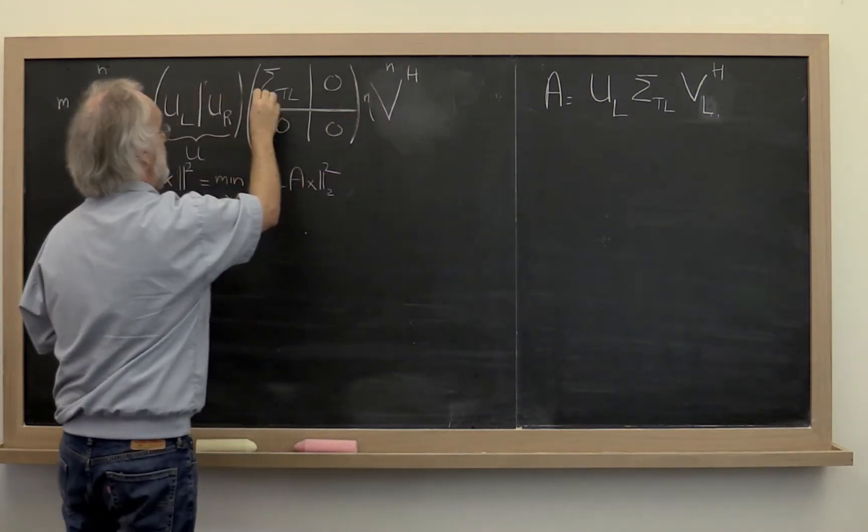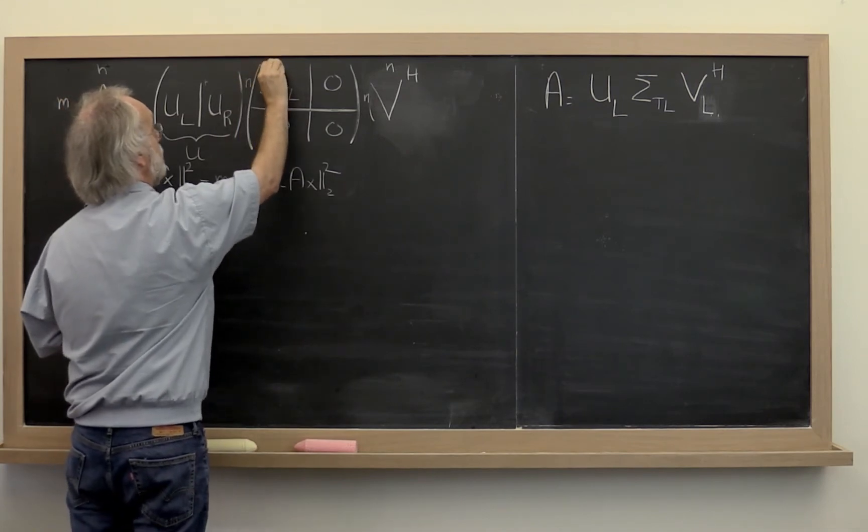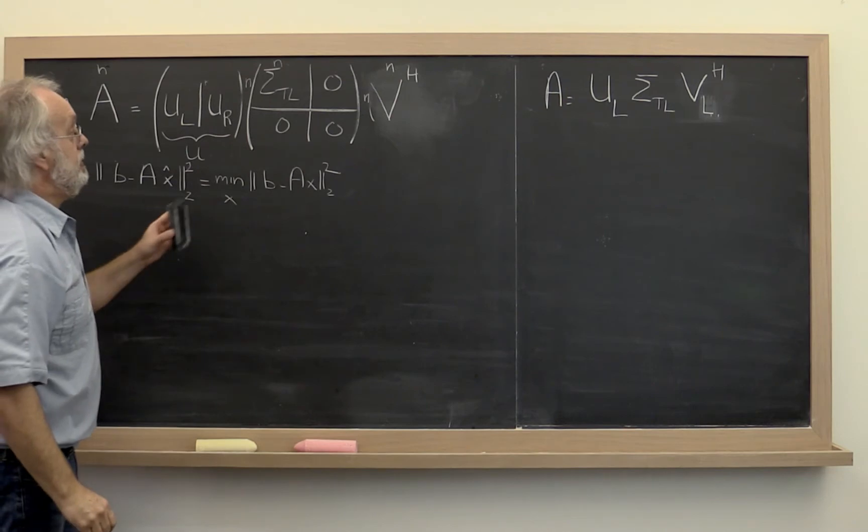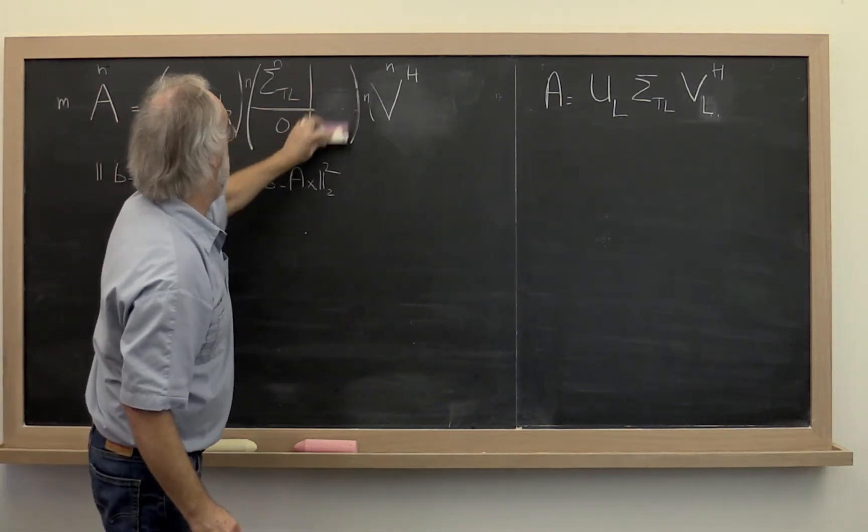What that means is that sigma must be N by N because the rank of the matrix is N. And what that means is that this right here needs to disappear.